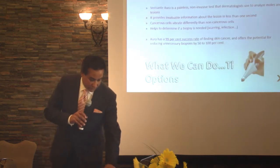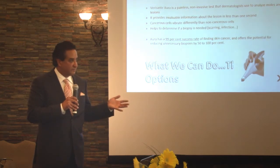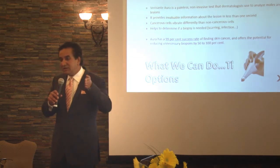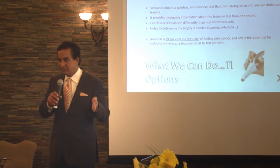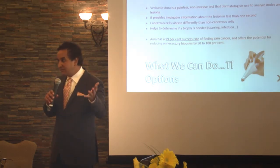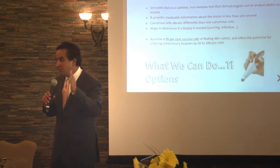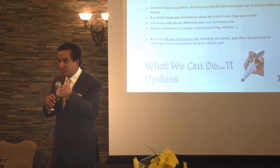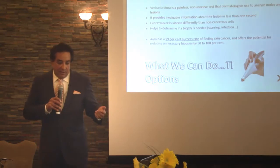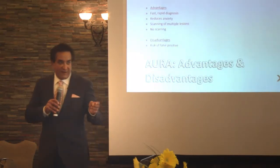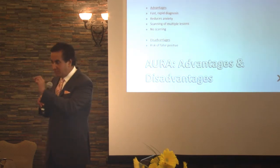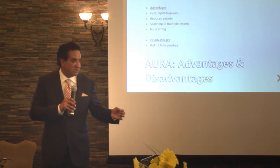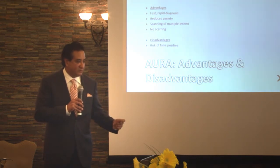If a mole has changed, we can use a dermatoscope, or what we do nowadays is use something called the Verisante Aura laser. Essentially it's a machine that can detect the difference in biochemistry between a cancer cell and a non-cancer cell, and it has a 99% sensitivity — so there's a 99% chance I'm not going to miss a cancer, which is very important. It makes it almost better than my eyes when I examine a patient. The advantage is it's fast and rapid — within 20 seconds I can look at a lesion and tell you whether it's anything to worry about. It reduces anxiety really fast; if the machine says it's benign, you know right away rather than waiting two weeks.